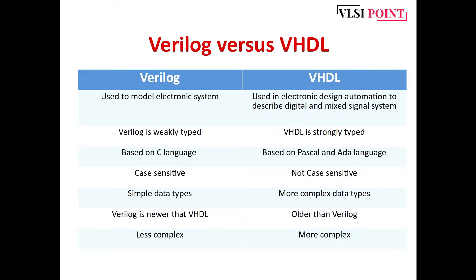Verilog is case sensitive; VHDL is not. Verilog has simple data types; VHDL has more complex data types. Verilog is a newer language with IEEE 2001 standard; VHDL is older, developed in the 1980s. Verilog is less complex in nature while VHDL is more complex. If you are a beginner, it is recommended to start with Verilog to build your concepts, then move to VHDL.